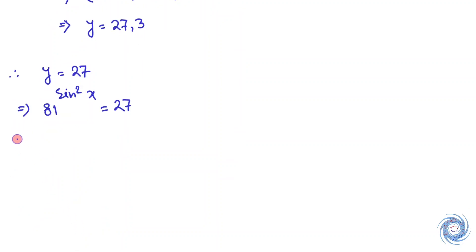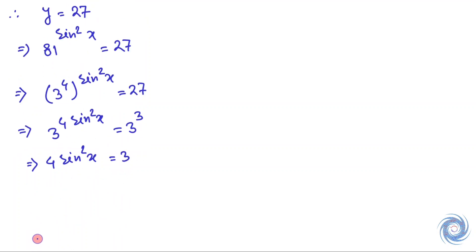Now this can be written as (3⁴)^(sin²x) = 3³. Equating the index of 3 we have 4sin²x = 3, which implies sin²x = 3/4, and so x = ±π/3.